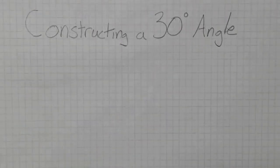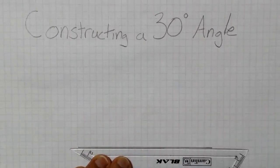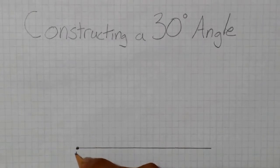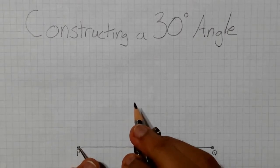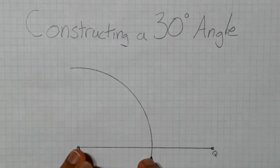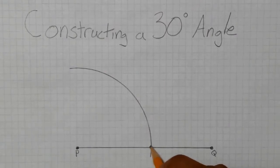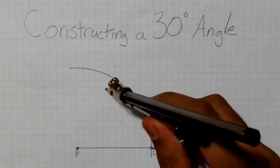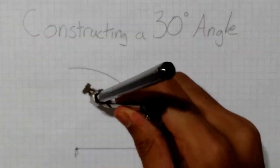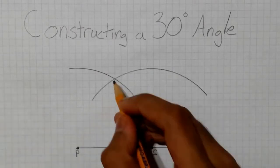Constructing a 30 degree angle. We'll first draw a line segment at the bottom of the page as one leg of the angle and label it PQ. Then we'll place the tip of the compass on point P and make a large arc. Then label the intersection of the arc and the line segment point S. Then place the tip of the compass on point S and, using the same angle measure, draw another large arc, labeling this point of intersection point T.